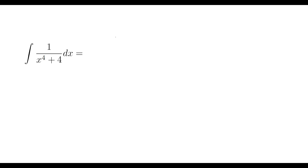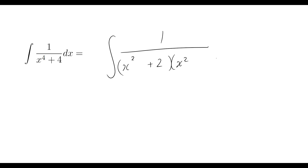The first step is to break this up into different factors in our denominator. We've got an x squared plus 2 appearing twice, which gives us the x to the 4 and the plus 4. We need to figure out what else to include so that the x squared terms cancel. By inspection, you can guess it's going to be a plus 2x and a minus 2x.